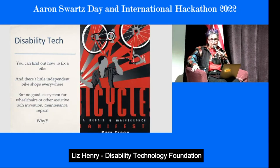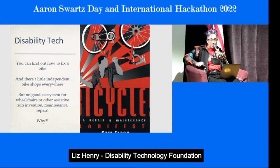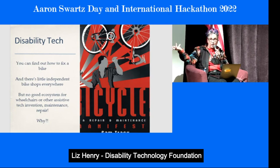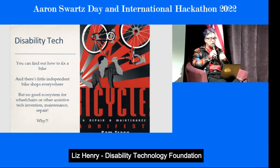When I talk about ecosystems, I think about bicycles. Bicycles have been around a long time. You don't need one, but if you have one, it gives you all this power and independence. It's a tremendous piece of technology with all kinds of ecosystems to support it. We now have e-bikes getting cheaper and more affordable. You can build a whole business model around selling, fixing, and inventing bikes. But there's no equivalent good ecosystem for wheelchairs and other assistive tech invention or maintenance.